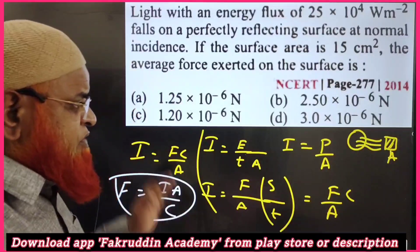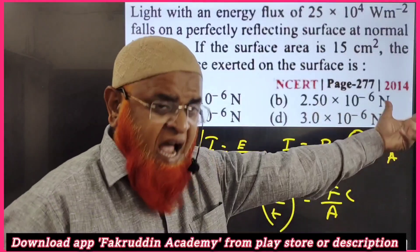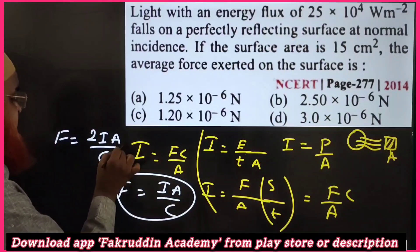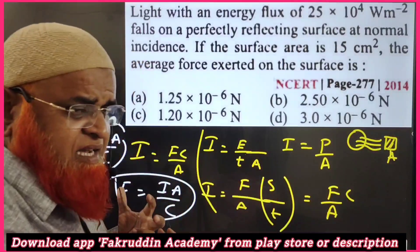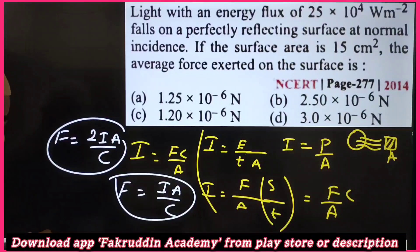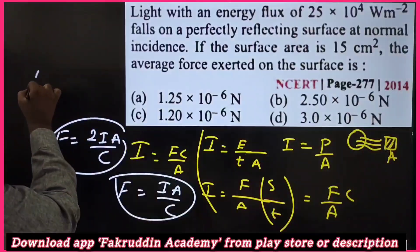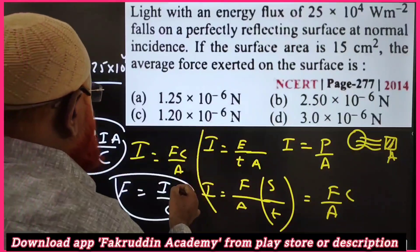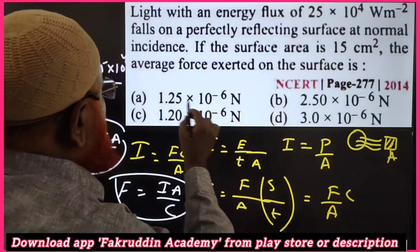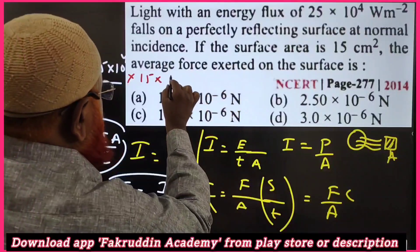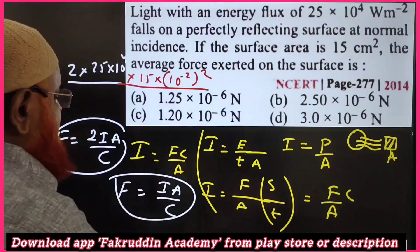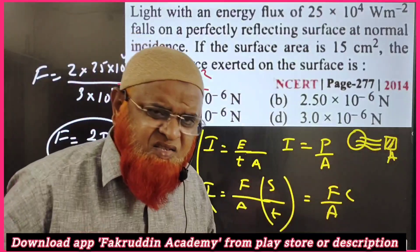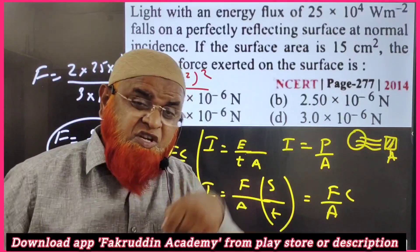When light falls on a body and reflects back, the force doubles: F = 2IA/c. Substituting values: Intensity = 25 × 10⁴, Area = (15 cm)² = (15 × 10⁻² m)², and c = 3 × 10⁸ m/s. Calculate and select the correct option from the description.